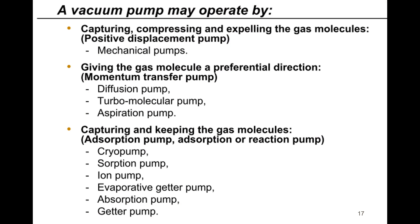The first general principle: a vacuum pump may be operated by capturing, compressing, and expelling gas molecules — that is called a positive displacement pump. A good example is the mechanical pump. The second working principle involves giving gas molecules directional momentum — that is the momentum transfer pump. Examples include the diffusion pump, turbo molecular pump, and aspiration pump.